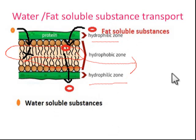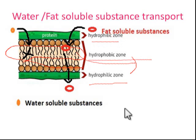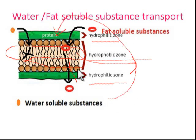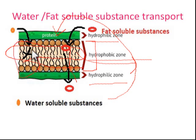This central region is hydrophobic. For example, if there is a fat-soluble substance, it can pass through the protein molecule and reach the tail region. The major portion here is hydrophobic, so fat-soluble substances can move across this region and easily go into the cell. Whereas water-soluble substances cannot move across this region because the major portion is hydrophobic in nature.